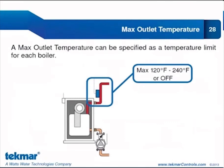Each application showed all boilers with individual boiler outlet sensors. New to the 284, we can use those outlet sensors not just to monitor outlet temperature but also as a limiting device by selecting a maximum outlet temperature for each boiler. The range is 120 to 240°F. If you only want to monitor and not limit, you can turn the max setting off. This gives us the opportunity to limit individual boiler temperatures — a fantastic new feature that sets the 284 apart.